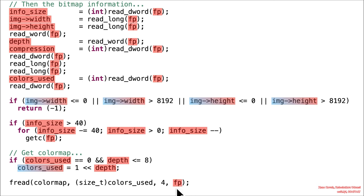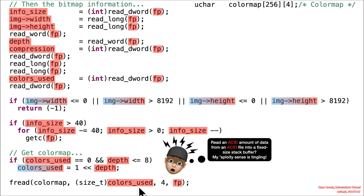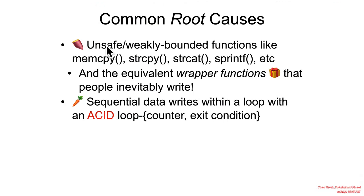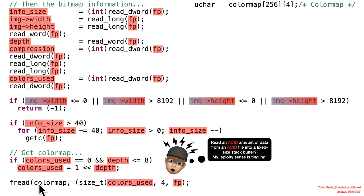And then ultimately, we get down to this. It is a fread, file read, from the file pointer, 4 bytes at a time, colors used, number of bytes. But this, my friends, with this color map being a big fixed-size buffer on the stack, is setting off my SploitySense because we are reading an ACID amount of data from an ACID file into a fixed-size stack buffer. That makes my SploitySense tingle. And what kind of tingle is it? Well, it looks like an unsafe or weakly bounded function. It's not listed here, but there are many that are not listed here. And so that fread is ultimately leading to a buffer overflow. It's not safe.